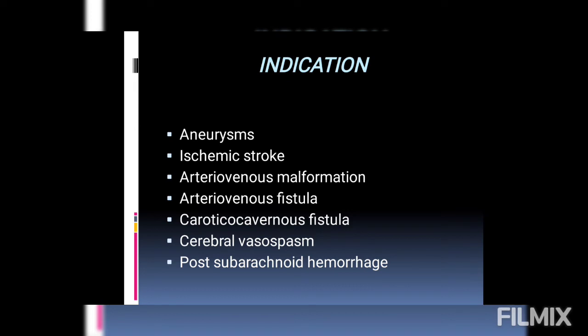Then we have AVM — arteriovenous malformation. Normally, arteries and veins are not in direct communication; there are many capillaries in between which balance the pressure. In AVM, however, many arteries and veins communicate directly. Since arterial pressure is higher, this direct communication causes venous and arterial enlargement, which can lead to aneurysm and ultimately to hemorrhage.